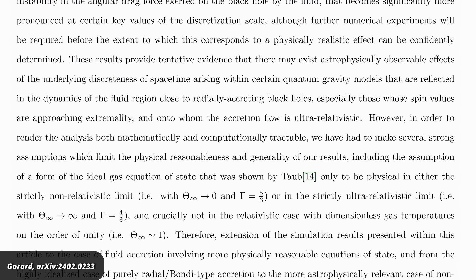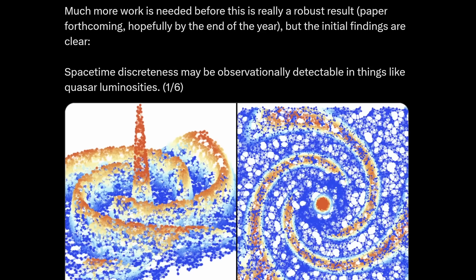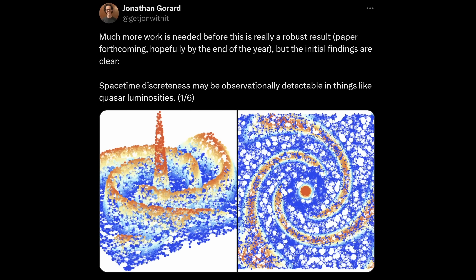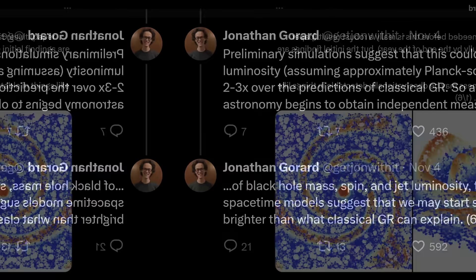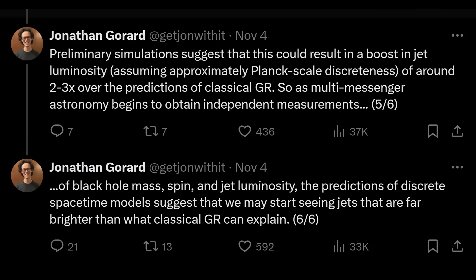In the paper, he doesn't quantify it, but just somewhat vaguely writes that these results provide tentative evidence that there may exist astrophysically observable effects of the underlying discreteness of space-time arising within certain quantum-gravity models. Then, a few weeks ago, he leaked on X Twitter some preliminary results, according to which preliminary simulations suggest that this could result in a boost in jet luminosity assuming approximately Planck-scale discreteness of around two to three times over the predictions of classical general relativity. Big if true, as they say, because that might mean that we could be closer to finding evidence for the quantization of gravity than we thought.